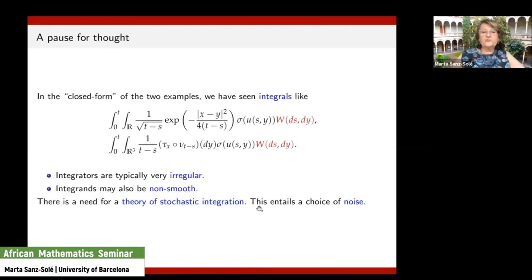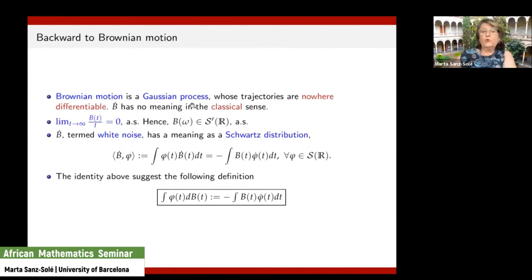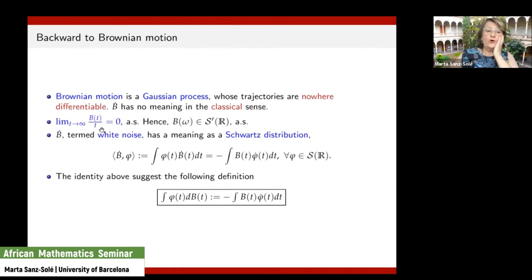The theory of stochastic integration will depend very much on the type of noise considered. To discuss this I will go back to Brownian motion. Brownian motion is a Gaussian process — all its random variables are Gaussian — but it is well known that its paths are nowhere differentiable, so integrating in the classical sense has no meaning. However, there is a law of large numbers for Brownian motion saying that the limit as t → ∞ of B(t)/t is zero, meaning the trajectories are of slow increase. In the language of distributions, this is a Schwartz distribution, so we can consider the derivative in the distributional sense — this is called white noise.